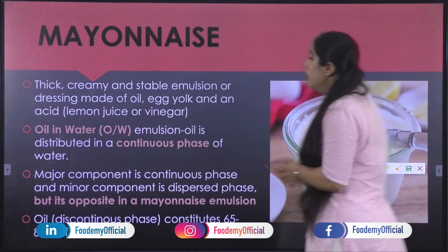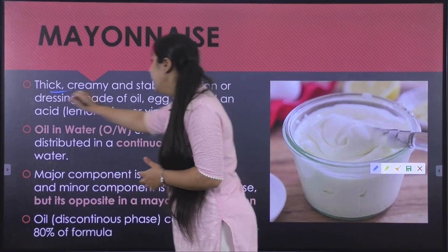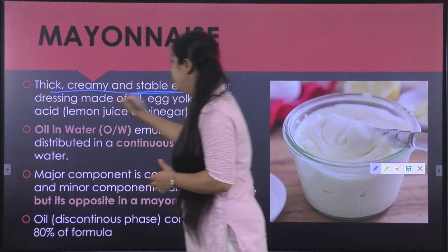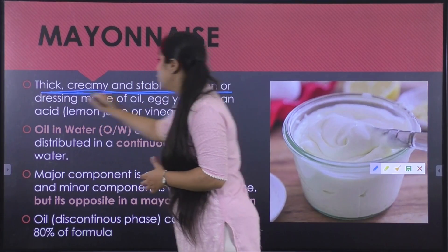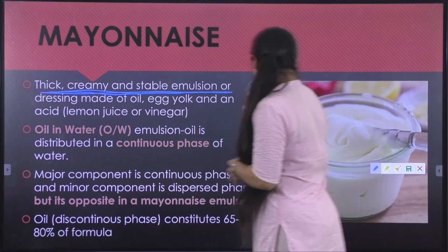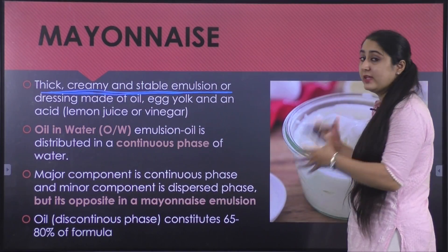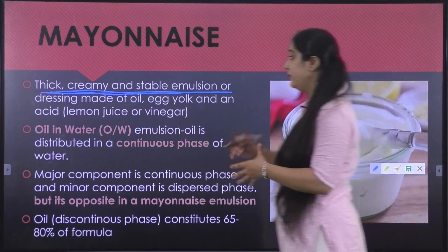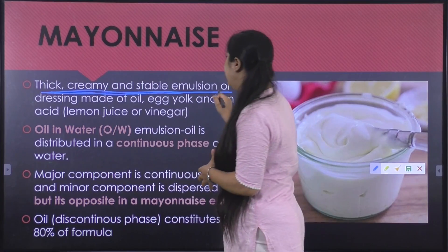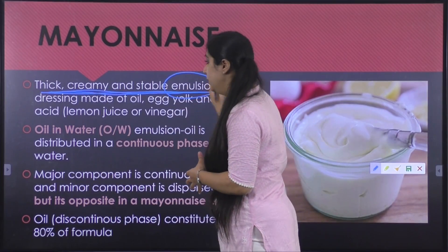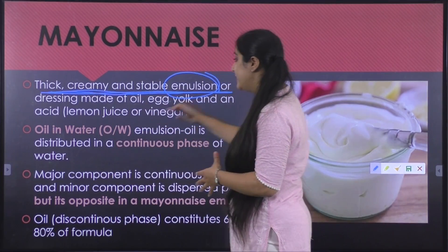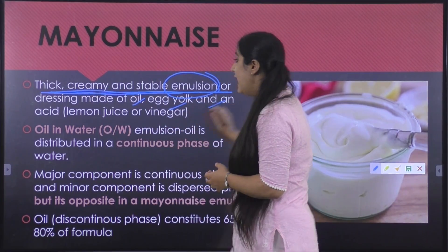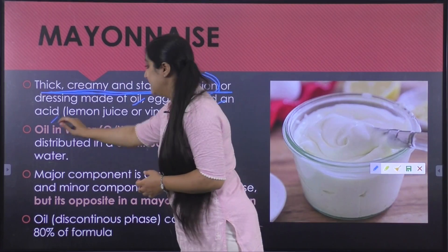Mayonnaise is basically a thick, creamy and stable emulsion. If you look at the texture of the mayonnaise, it has a very creamy kind of texture and basically it is an emulsion or a dressing made up of oil, egg yolk and acid.